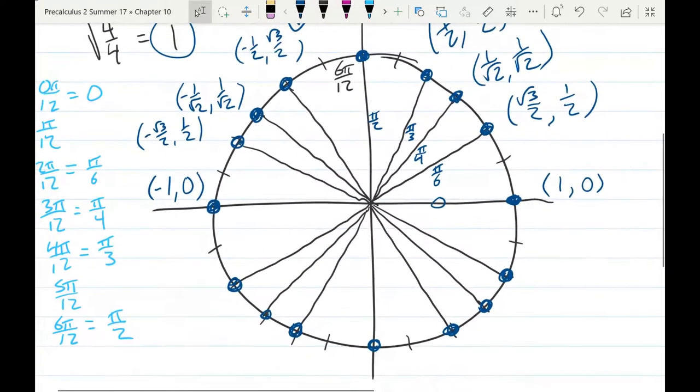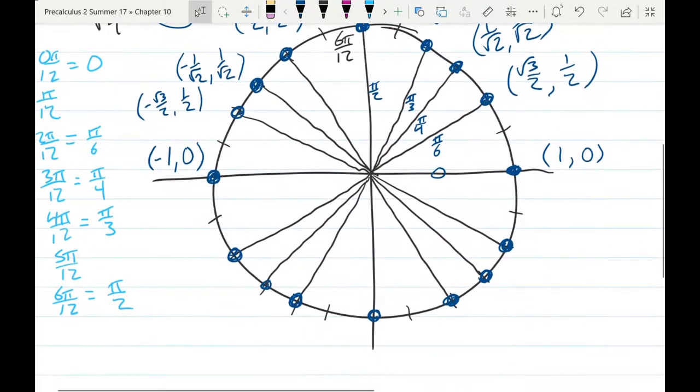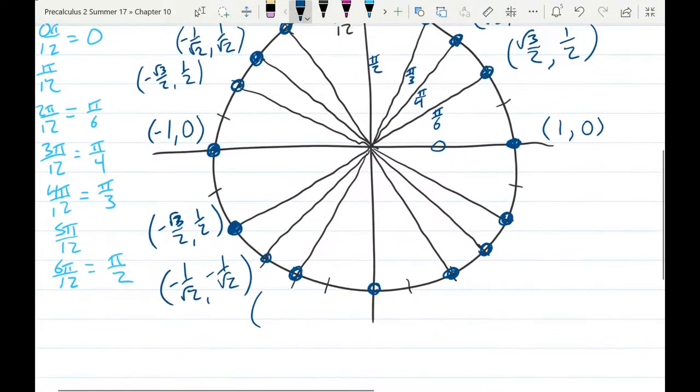So we have the upper half. How do we get the lower half? We're going to copy all the points from the top, except we're going to make all their y coordinates negative for the bottom. So I'll start here. So I'm looking here and I'm just making my y coordinate negative. Negative square root three over two, one half, negative one over square root two, negative one over square root two. And last, at that point, negative one half, negative square root three over two. And at the very bottom, we have zero for x, negative one for y.